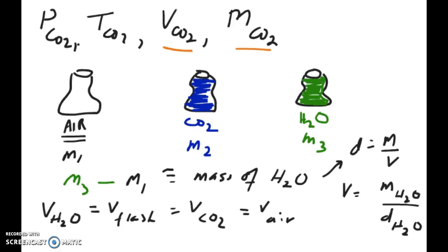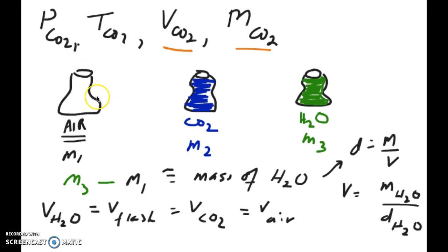In the previous video I talked about calculating the mass of CO2, which is one of the parameters we need. In order to do that, I have to subtract out the mass of air from my flask to get the mass of the real empty flask. Once I have the mass of the empty flask, I can take the mass of CO2 in the flask, subtract it from the mass of the empty flask, and that gives me just the mass of CO2.